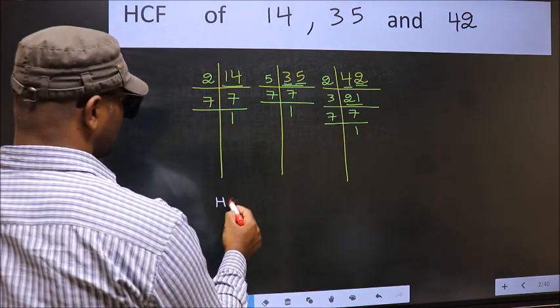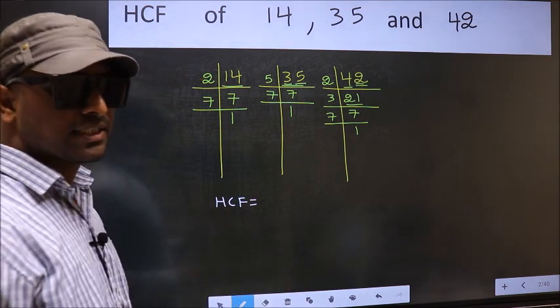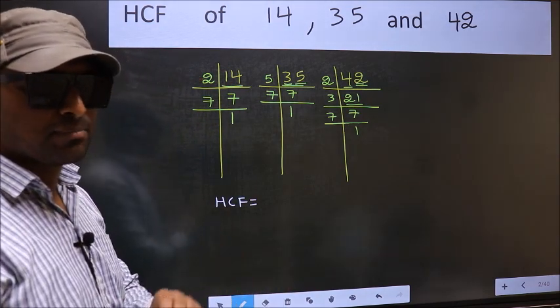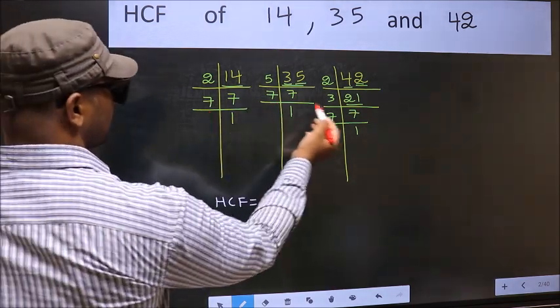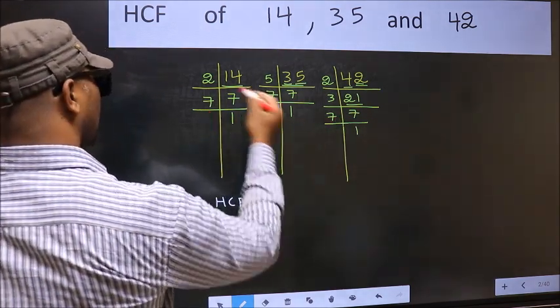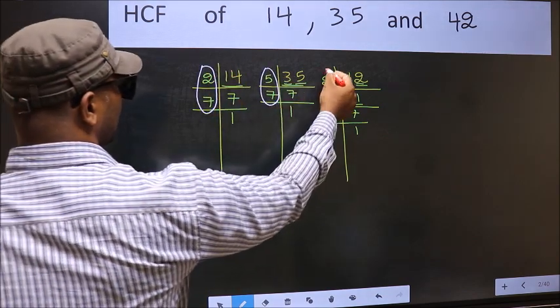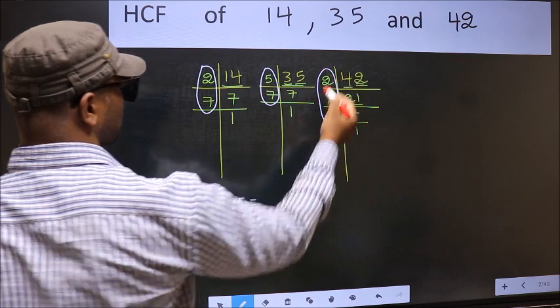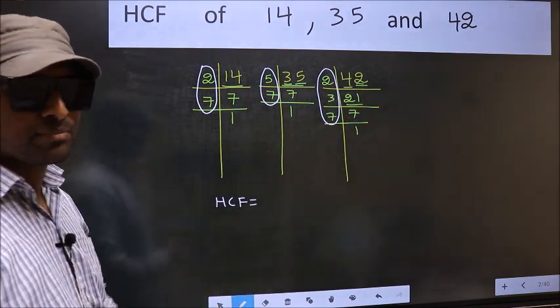Therefore, our HCF is - HCF is the product of the numbers which should be present in these 3 places. That is 3.